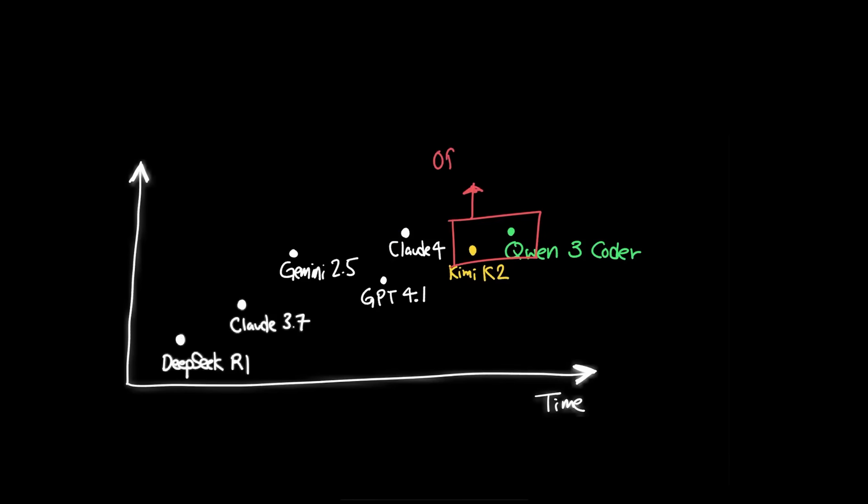What's even crazier is that just like the KimiK2 model, the success that these companies found was released completely open source with the Apache 2, which is fully permissive.